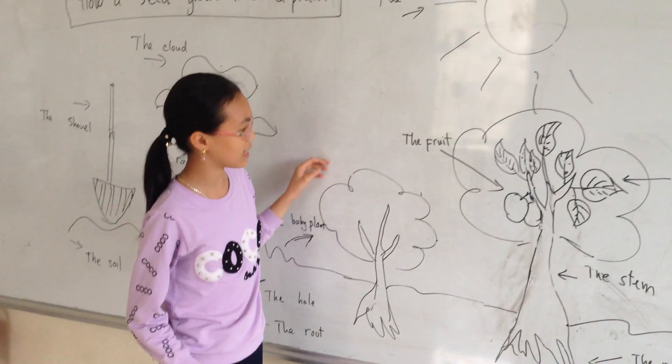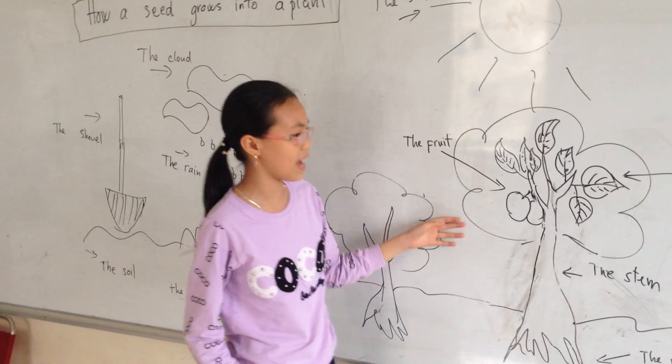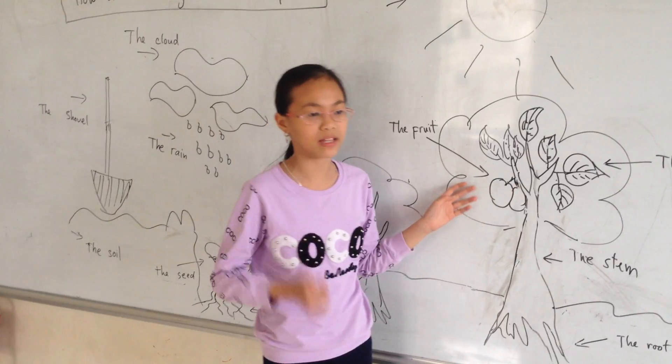Then, the baby plant grows into a full plant. The plant has four parts.